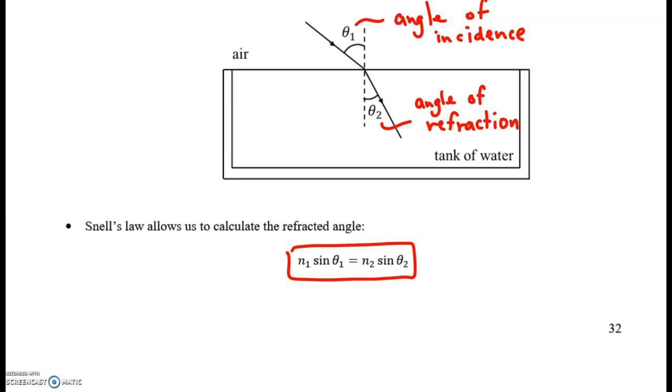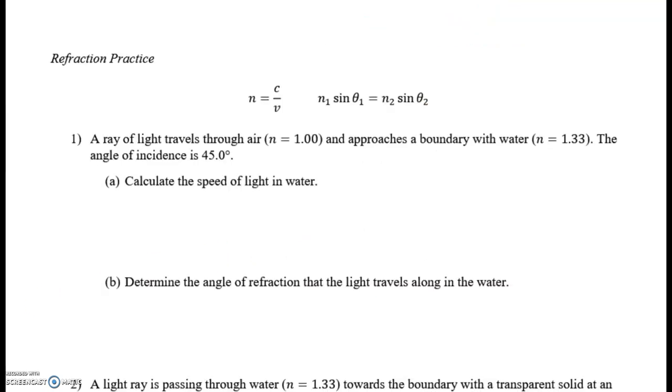Let's look at an example. A ray of light travels through the air, which has a refractive index of 1, and approaches a boundary with water, which has a refractive index of 1.33. The angle of incidence is 45 degrees. Let's draw a picture before we do anything else.